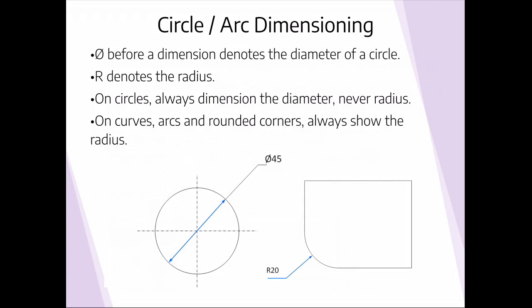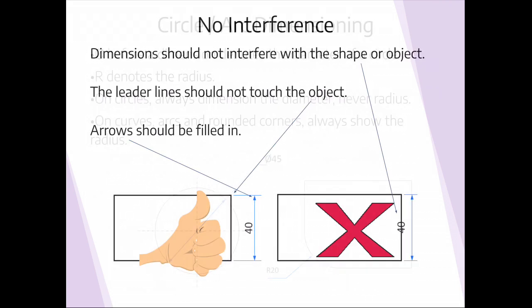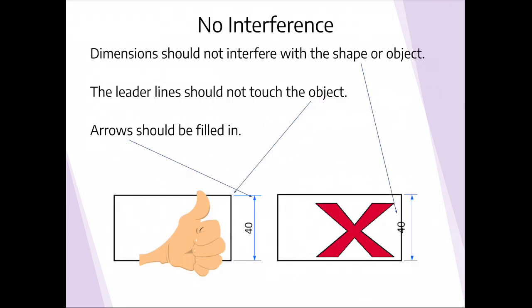Some other rules are more about organisation. Dimensions should not interfere with the shape of the object. Wherever possible we want to avoid writing our dimensions on top of the object. That means keeping leader lines and arrows and dimension numbers, dimension values, out of the object. So we'd want to position it out to the left in this case not sitting on top of it like shown on the right.